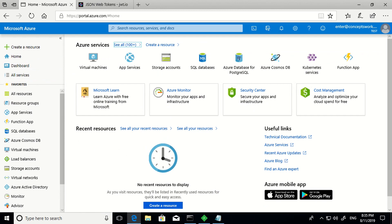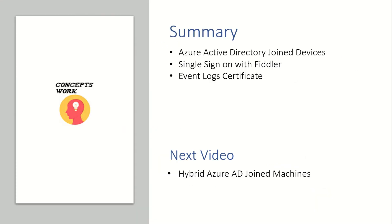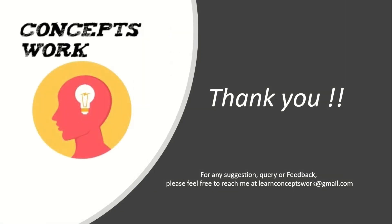That was all about how Azure AD joined devices work. To summarize: we discussed how Azure AD joined devices work, what happens when you join a device to Azure Active Directory, single sign-on, Event Viewer logs in the User Device Registration folder, and how the certificate is saved in computer context rather than user context as in Azure AD registered devices. In the next video, I'll be talking about hybrid Azure AD joined devices. If you learned something new, please subscribe. For feedback, questions, or suggestions, reach me at learnconceptswork@gmail.com. Thank you.